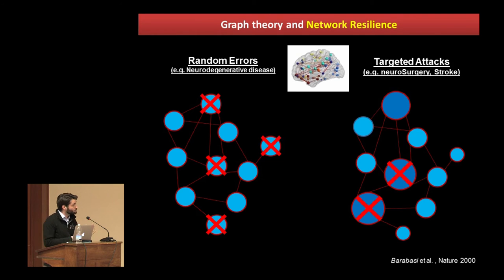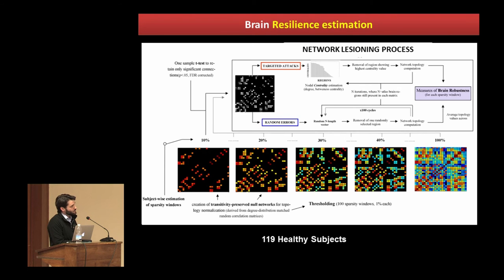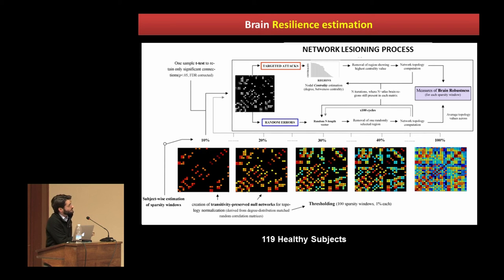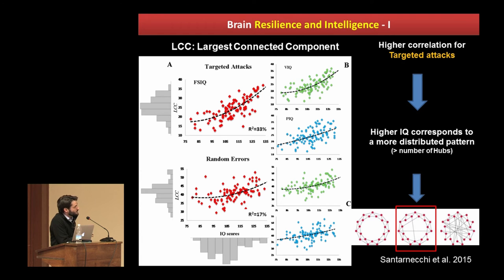To map this, I created different connectivity matrices, repeated the analysis, and performed random error simulation and targeted attack simulation millions of times over three months of computation, getting an index of robustness. The index I'll show is the size of the largest connected component (LCC) — the largest network in the brain still connected even after multiple lesions. If you correlate the LCC with full-scale IQ, performance IQ, or verbal IQ, you see a clear correlation: people with higher IQ can still properly function even when you remove 40 out of 100 regions, while people with lower IQ drop even with just 10 regions removed.